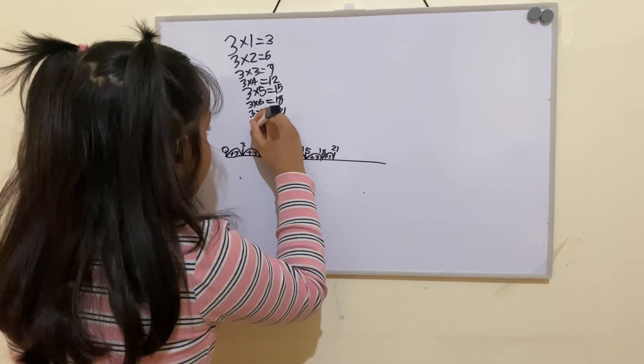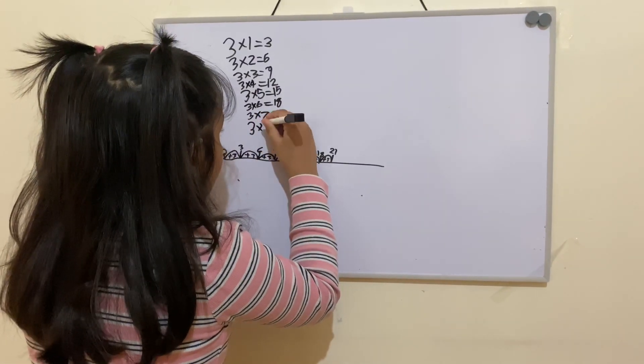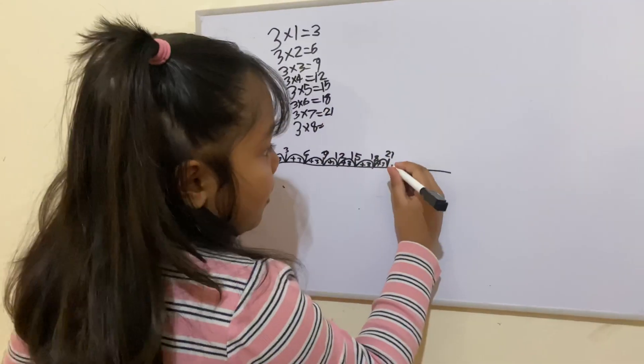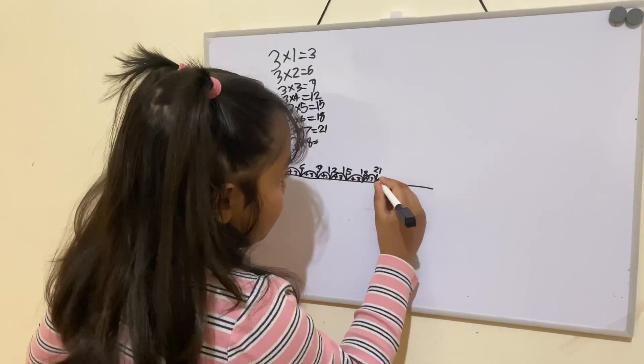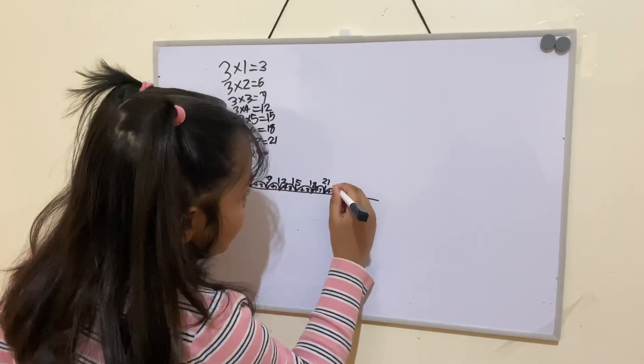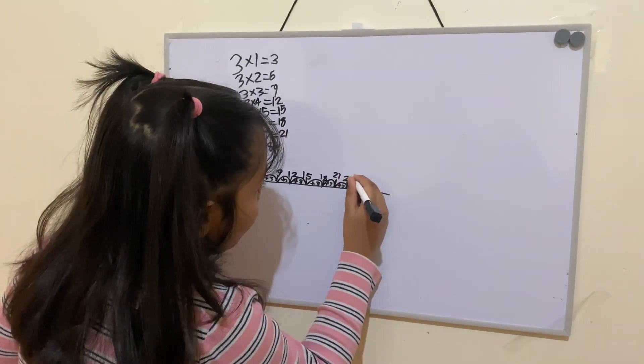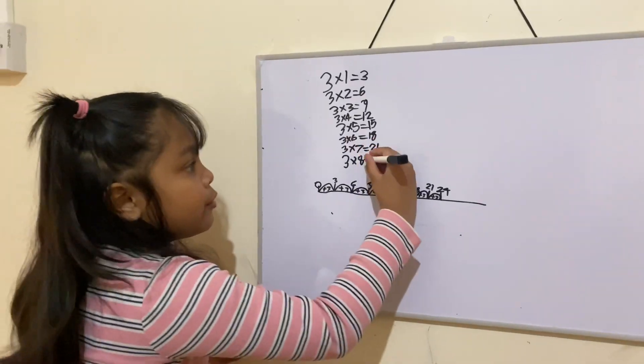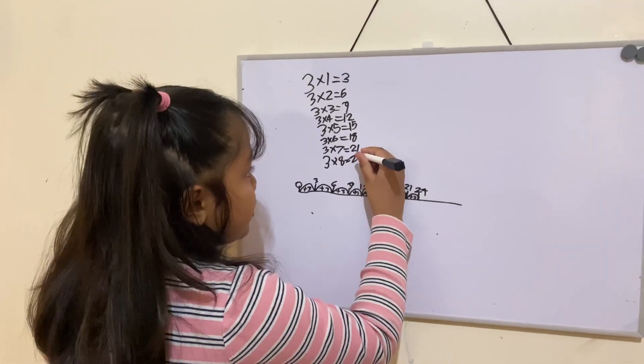3 times 8. You add one more jump. Equals 24. And that's how you do it with a number line.